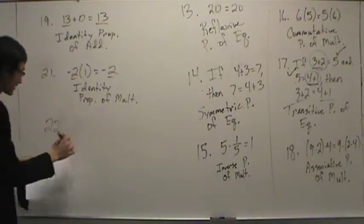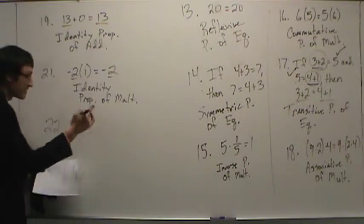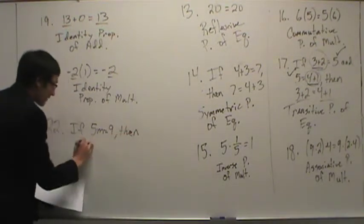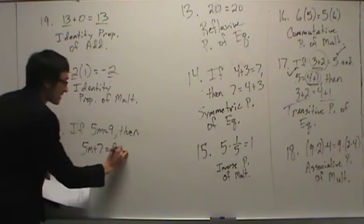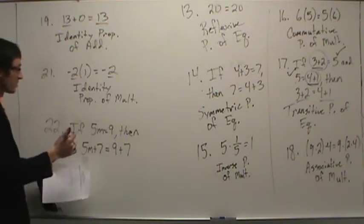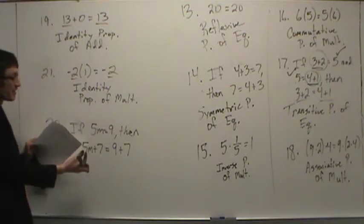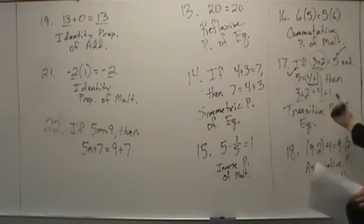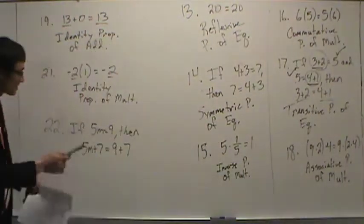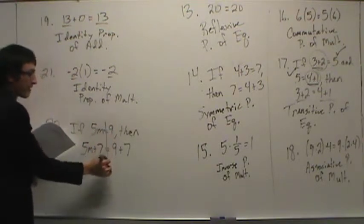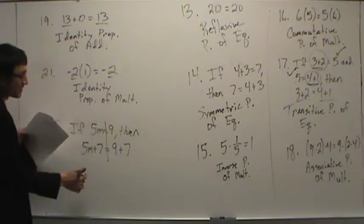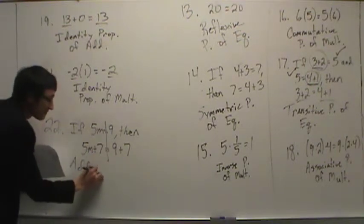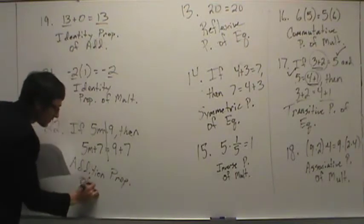Number twenty-two: if five m equals nine, then five m plus seven equals nine plus seven. If-then gives a clue it's a property of equality. We didn't flip the equation, and it's not transitive. Draw a line down the center of the equality — what happened to the left side? Seven was added. What happened to the right side? Seven was added. This is the addition property of equality.